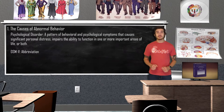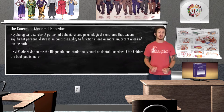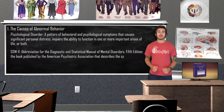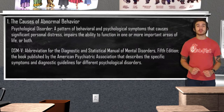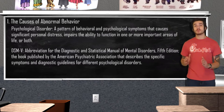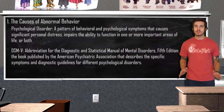The Diagnostic and Statistical Manual for Mental Disorders, or the DSM, published by the American Psychiatric Association, describes the specific symptoms and diagnostic criteria for all mental disorders. Be sure not to confuse the American Psychiatric Association, who publishes the DSM, with the American Psychological Association — same abbreviation, different organization.